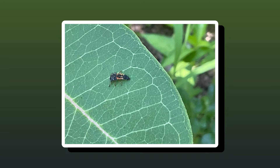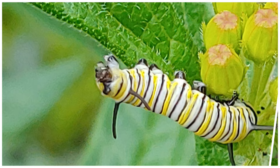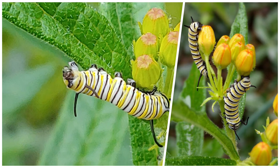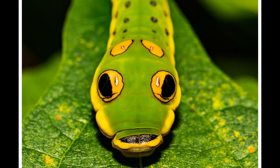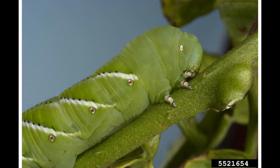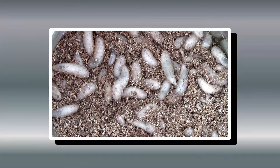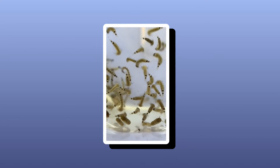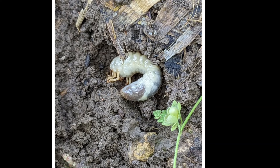Ladybugs, like we talked about last month, look like little alligators gobbling up the pest aphids. Butterflies as caterpillars — some are beautiful, some frightening, and some camouflaged. Flies, ants, and mosquitoes look like tiny pale worms called maggots. Beetles are grubs rolled up in a C-shape — white, wrinkly, and soft, living underground.